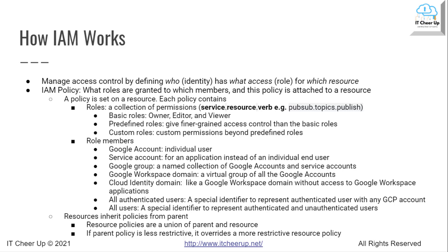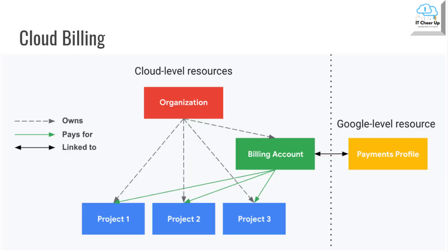If you want to learn more about IAM and security for each individual Google Cloud service, you can review the service's last-minute cheat sheet video on my channel. You will have some questions on IAM for cloud billing in the PCA exam. Now let's move to cloud billing. There are two types of relationships governing interactions between organizations, cloud billing accounts, and projects: ownership and payment lineage.